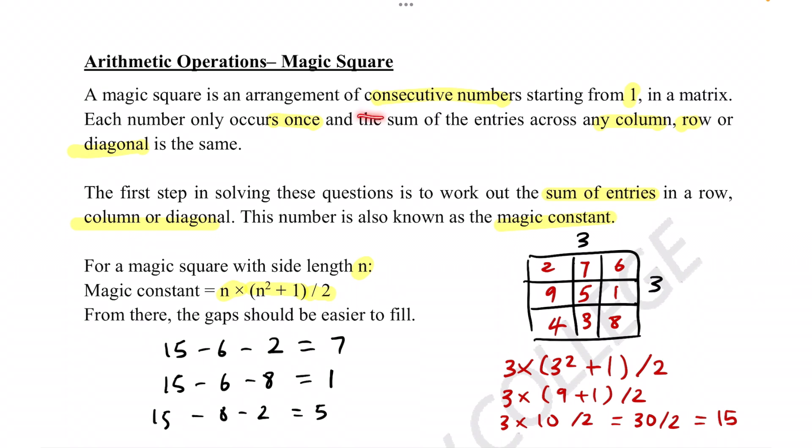What it means by having consecutive numbers starting from 1 in a matrix is that, as you can tell, they all consecutively go up. If you count this, 1, 2, 3, 4, 5, 6, 7, 8, 9, there's no number missing here. It just keeps going up, and they all still equal 15.